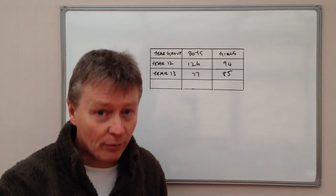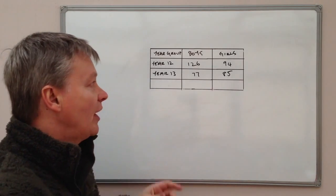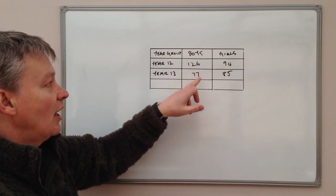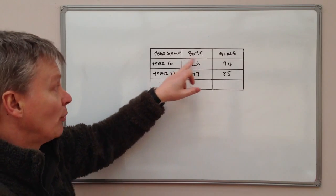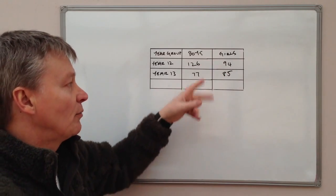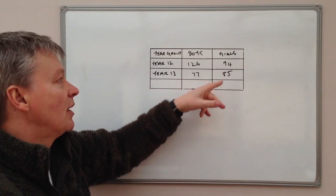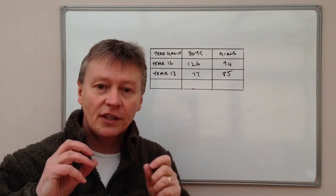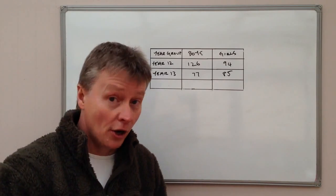So in other words, representative of the fact that there are more boys and less boys in year 12 and less boys in year 13, or a roughly equal number of girls in year 12 and 13. So to make it representative of that overall amount.